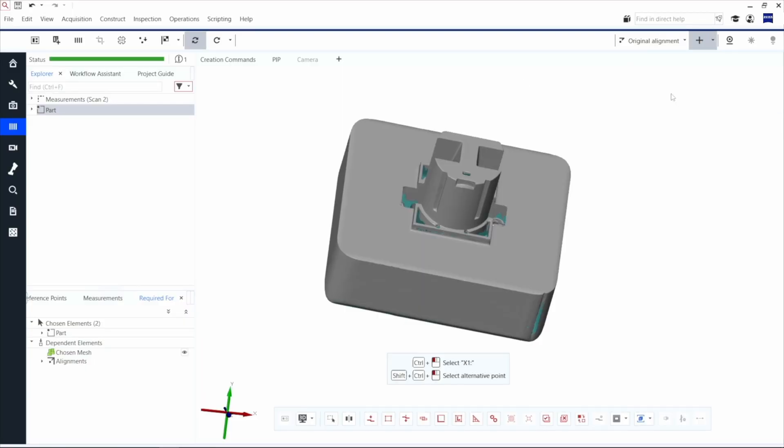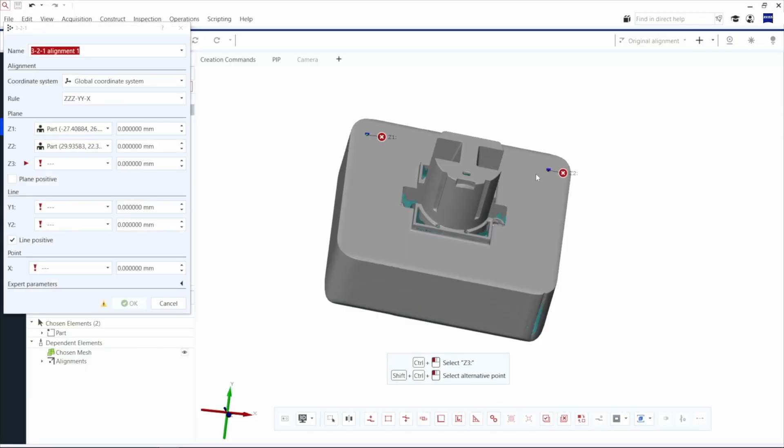Then we can align the mesh in a certain coordinate system in Zeiss Inspect, which helps to easily orient the mesh afterwards, and we have defined the origin of the mesh.